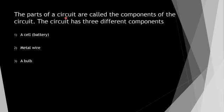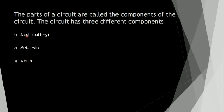The parts of a circuit are called the components of the circuit. The circuit has three different components. As shown in the simple circuit picture, that circuit contains: a cell or battery, metal wire, and a bulb.